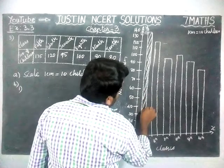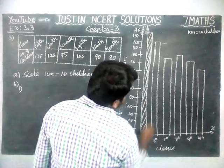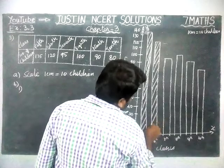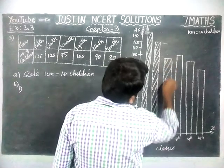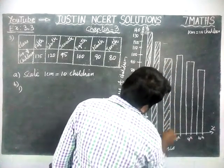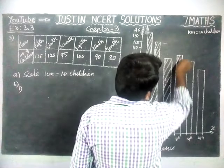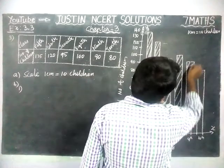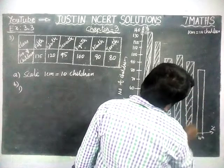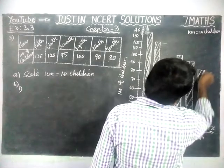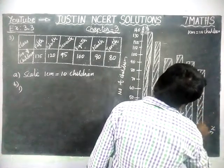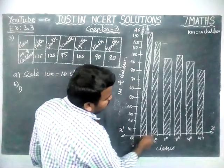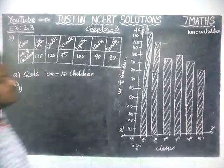We are going to shade this. We have to shade to show the difference — we have to leave one line between bars, then only the bar graph will be visible neatly.